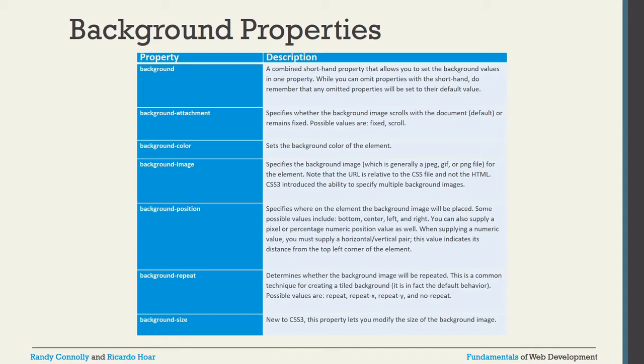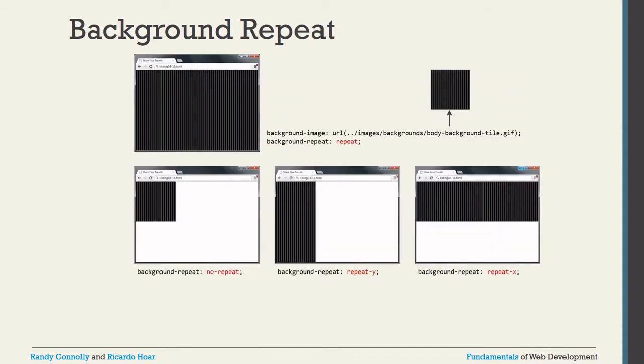Background-color sets only the color. Background-position lets you manage the image horizontally, vertically, or in other ways. Background-attachment lets you scroll the image with the document or fix it in the background. Background-size allows you to adjust the dimensions of the background image. All these are background properties in the box model.